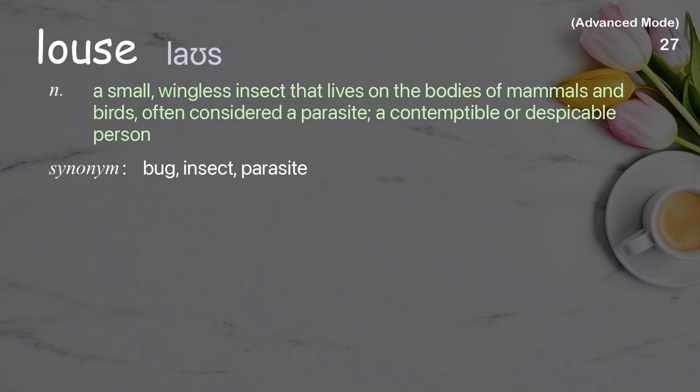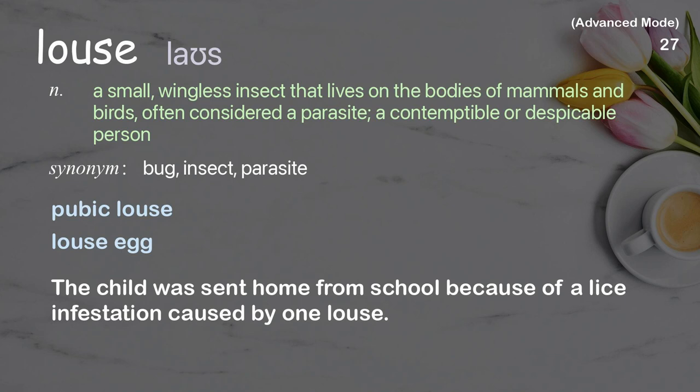Louse. A small, wingless insect that lives on the bodies of mammals and birds, often considered a parasite; also, a contemptible or despicable person. Examples: pubic louse, louse egg. The child was sent home from school because of a lice infestation caused by one louse.